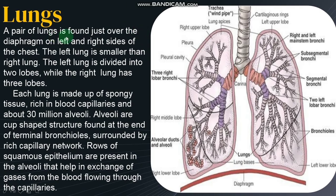The lungs are the primary organ of the respiratory system where exchange of gases takes place. A pair of lungs is found just over the diaphragm. The left lung is slightly smaller due to the heart and is divided into two lobes: upper and lower. The right lung has three lobes: upper, middle, and lower. Each lung is made up of spongy tissue rich in blood capillaries, with about 30 million alveoli. Alveoli are cup-shaped structures at the terminal bronchioles, surrounded by rich capillary networks, with squamous epithelium walls that facilitate gas exchange.